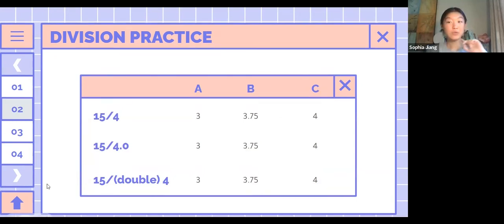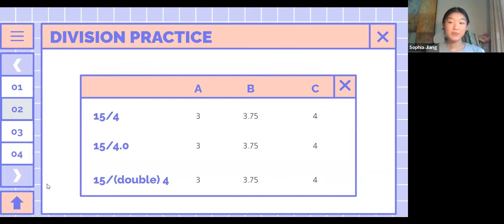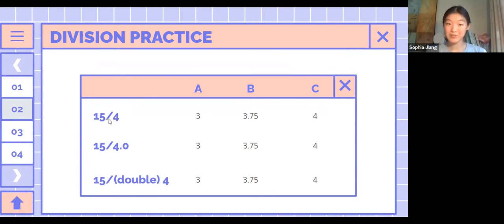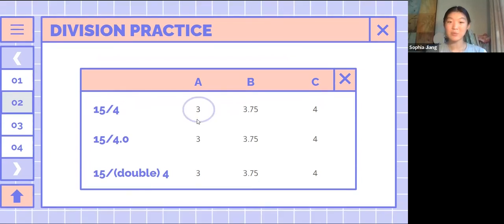Let's do some practice. If all of your numbers are ints, you will be returned an int, and if there's one double the result will be a double. Type in chat A, B, or C: what will 15 divided by 4 give you? When you divide 15 by 4 you do get 3.75, but remember what I said about them both being ints — the correct answer is 3.